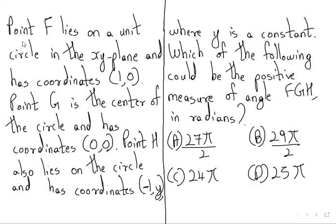Hello everyone. My name is Noshad and today we are going to solve this question. Point F lies on a unit circle in the XY plane with coordinates (1, 0). Point G is the center of the circle with coordinates (0, 0). Point H also lies on the circle with coordinates (-1, Y), where Y is a constant. Which of the following could be the positive measure of angle FGH in radians? Option A: 27π/2, Option B: 29π/2, Option C: 24π, Option D: 25π.